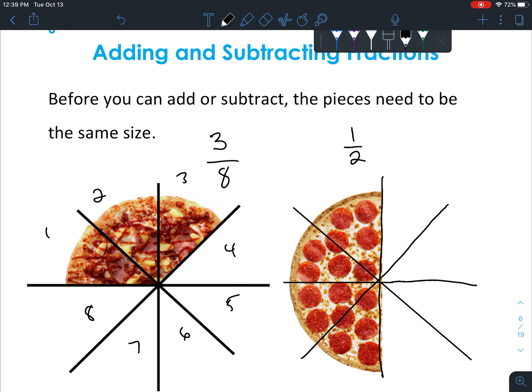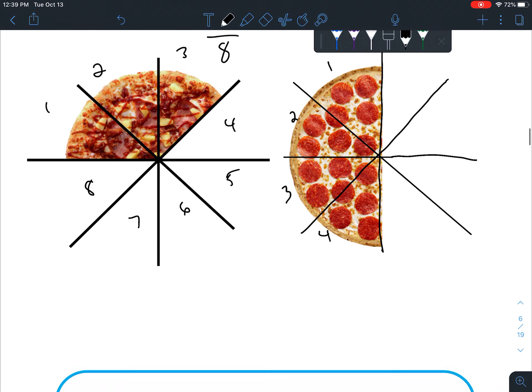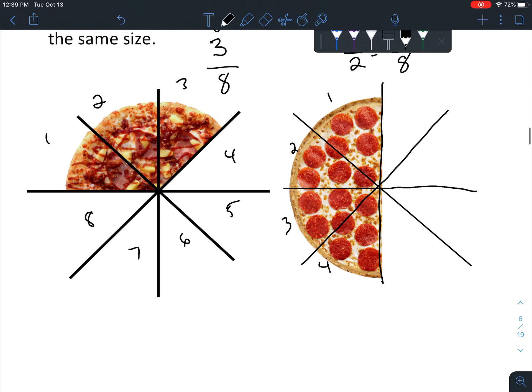Now you can see that one half of the pizza actually contains one, two, three, four pieces that are the same size as the ones over here. So let's change that to one half equals four out of eight. Okay, so that's like what we did before with the equivalent fractions, and now it's actually very simple to add once you do that. So if we have three over eight plus four over eight, we've got seven pieces out of eight.